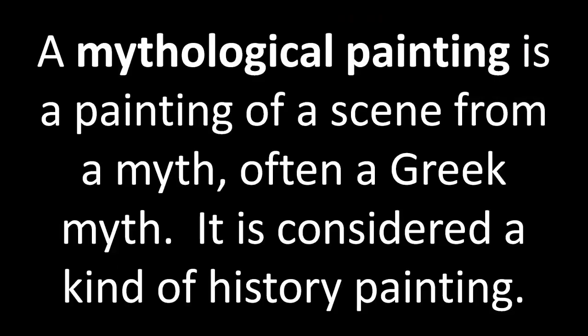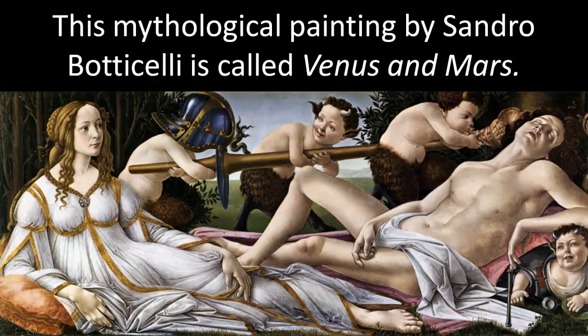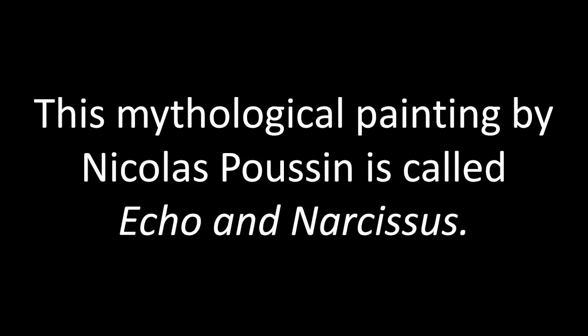This religious painting by Rembrandt is called Moses Breaking the Tablets of the Law. A mythological painting is a painting of a scene from a myth, often a Greek myth. It is considered a kind of history painting. This mythological painting by Sandro Botticelli is called Venus and Mars.